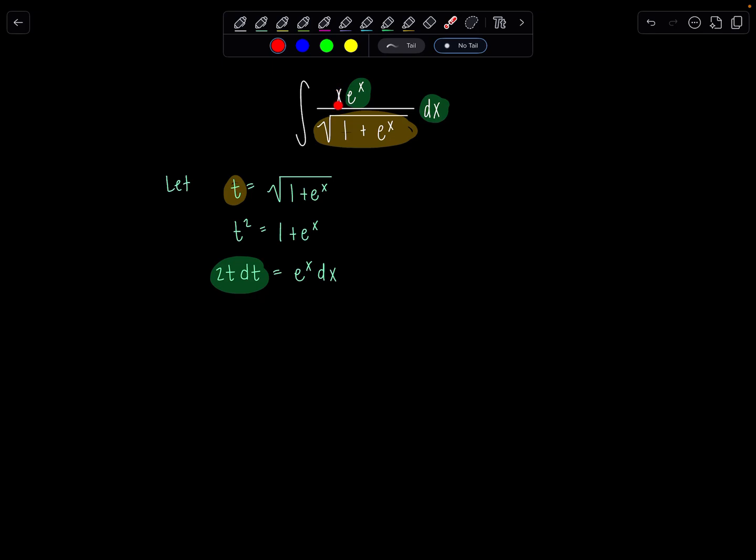But I still have this pesky little x over here. So what to do, we're just going to come back right to this line, and we're going to solve for x in terms of t. So I'm going to subtract 1, that way e to the x equals t squared minus 1. And then taking the natural log of both sides, we get x equals natural log t squared minus 1.